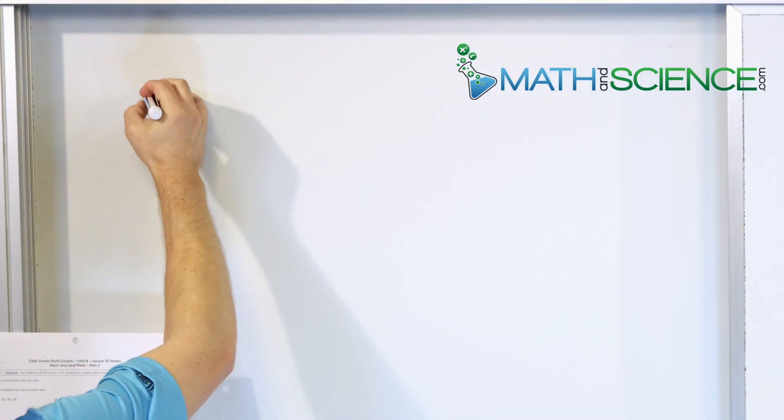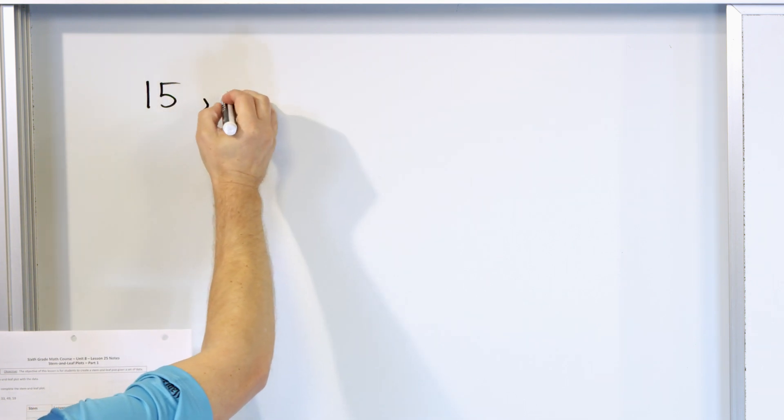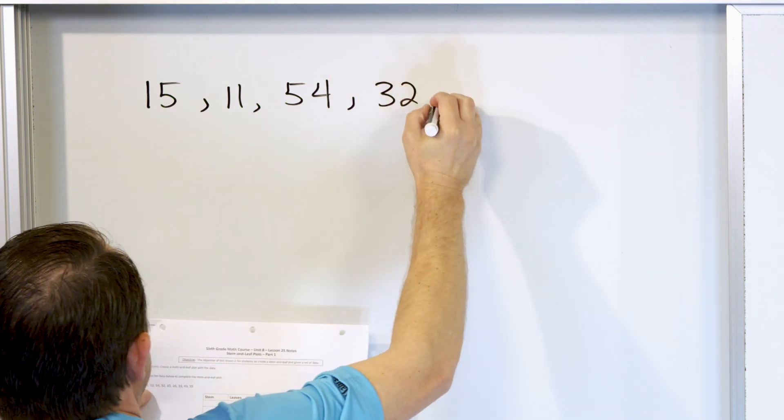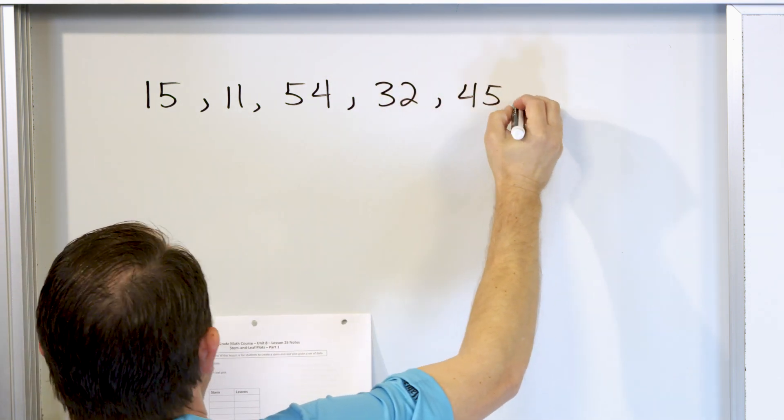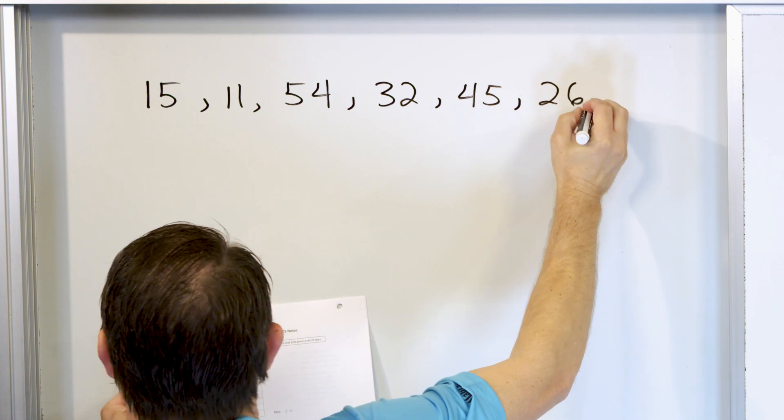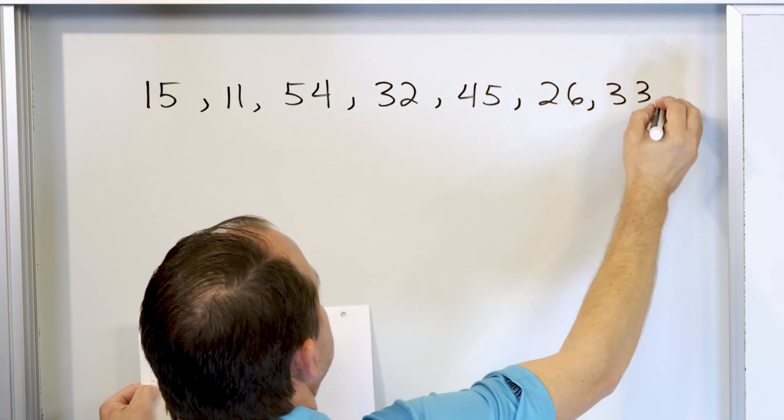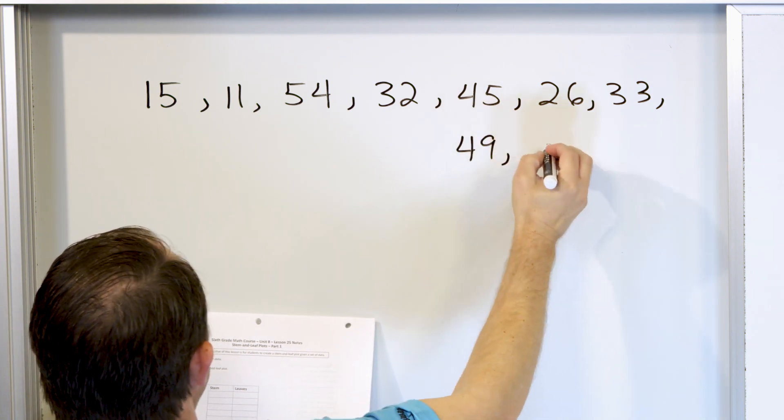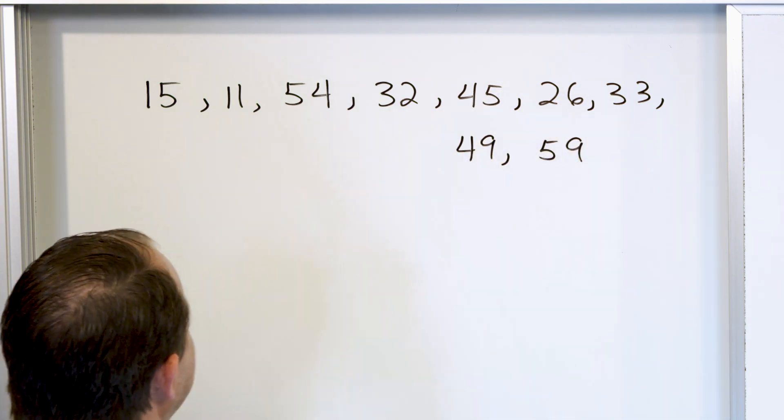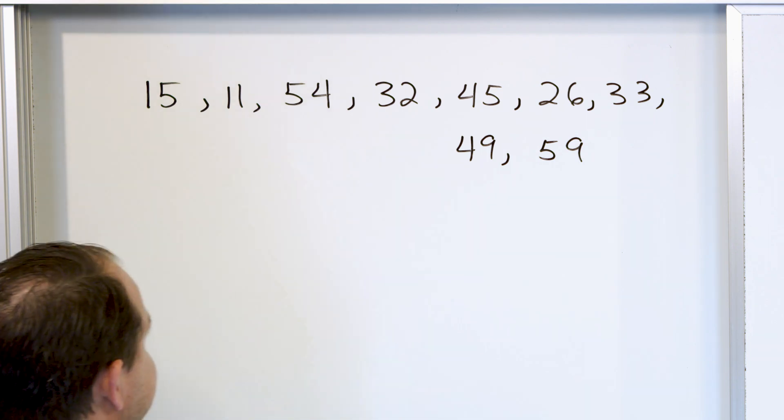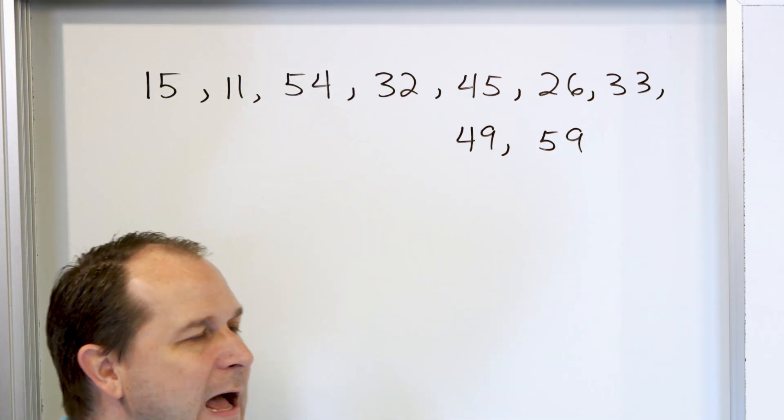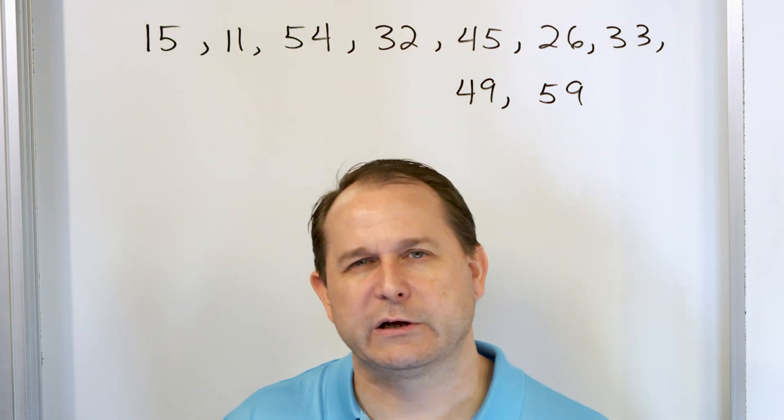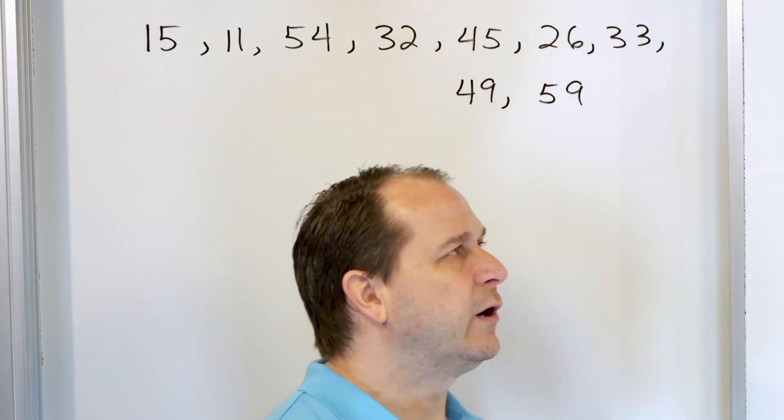Let's say I give you the data: 15, and then 11, and then 54, and then 32, and then 45, and then 26, and then 33. I'll continue on to the next line, 49, and then 59. So here's all of my data. Now when I look at this data, it's difficult to really see what's happening. I can plot it, I can do a box and whisker plot to kind of help me visualize what it looks like, but we're going to learn something called stem and leaf.